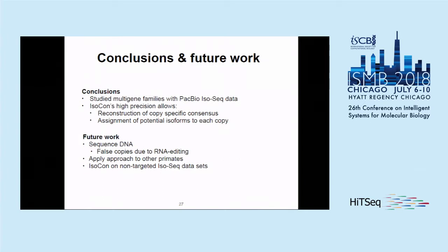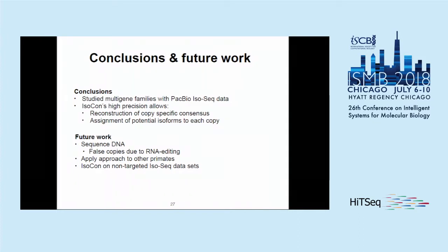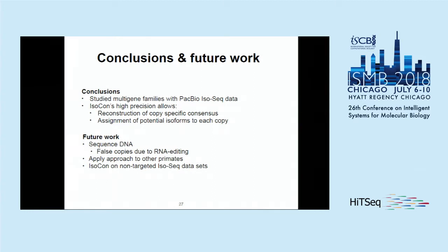IsoCon can predict highly accurate transcripts, enabling us to cluster transcripts into distinct gene copies and assign transcripts to these different copies — essentially deriving the sequences of distinct copies, not the exact copy number. For future work, we want to sequence DNA to remove false copies due to RNA editing, apply this de novo approach to other primates, and extend IsoCon to general non-targeted datasets.